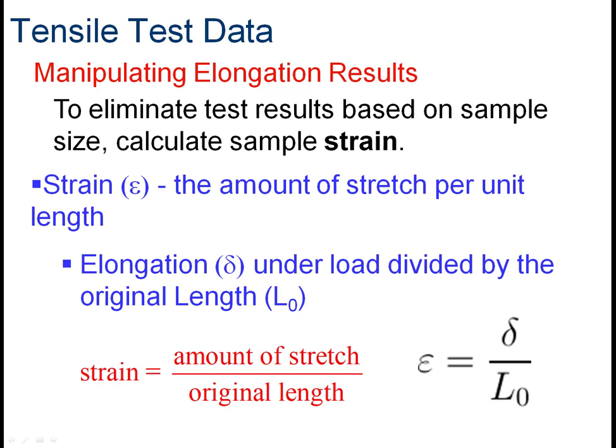Elongation has the same size-dependence problem. If you take a one-inch rubber band and pull it taut, it may stretch another inch or inch and a half. But a ten-inch rubber band may stretch another ten to twelve inches — that doesn't mean it's ten times stretchier. It just means the longer rubber band has more material to stretch. So a longer sample needs to be adjusted the same way. Instead of measuring raw elongation, we adjust it for its original length, and we call that adjustment strain.